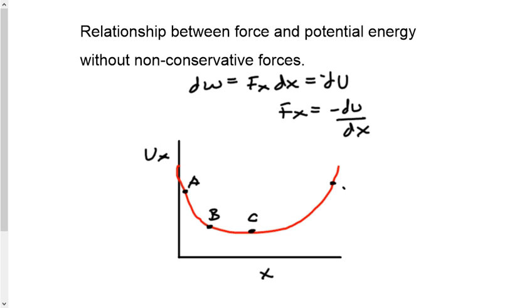If the object starts from rest, of course at positions A and D, this is where our value for U is going to be at maximum. We'll be at maximum potential energy here. So as we go down our graph here, what's happening is potential energy is getting converted into kinetic energy here.